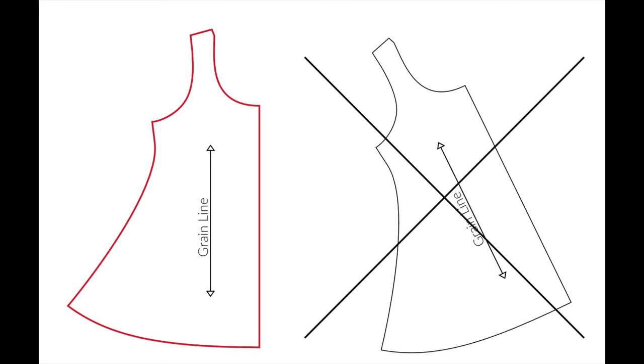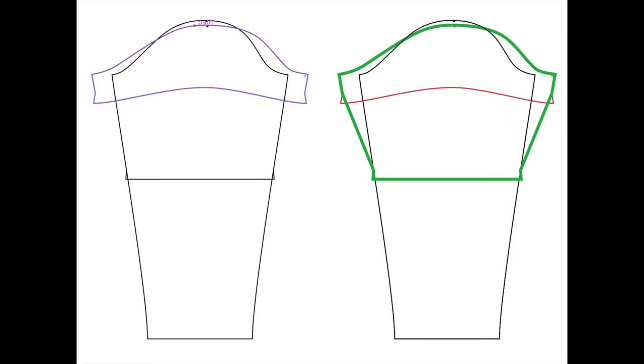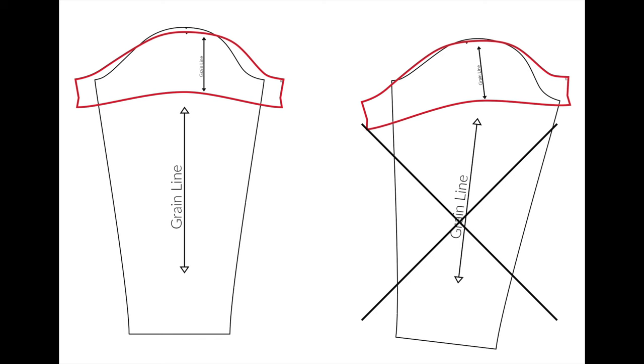Take care to ensure that the grain lines remain parallel when you're cutting the new pattern. For many patterns, the bodices are cut on the fold, but the sleeves are not. So if you're mashing sleeves together, you'll want to make sure that those grain lines remain parallel. They don't have to be on top of each other, but they need to be parallel so that your fabric isn't twisted when you're sewing your sleeves.